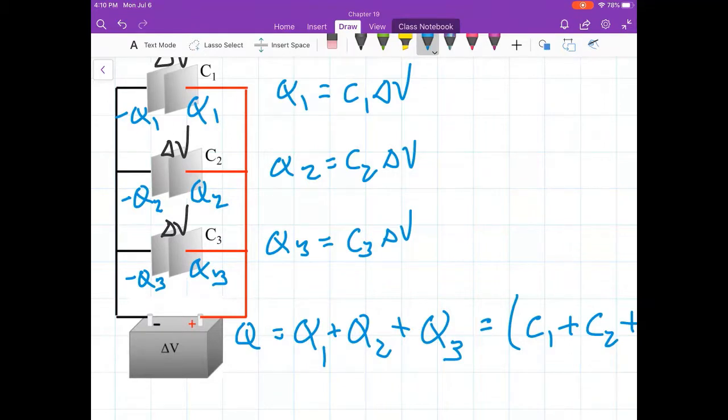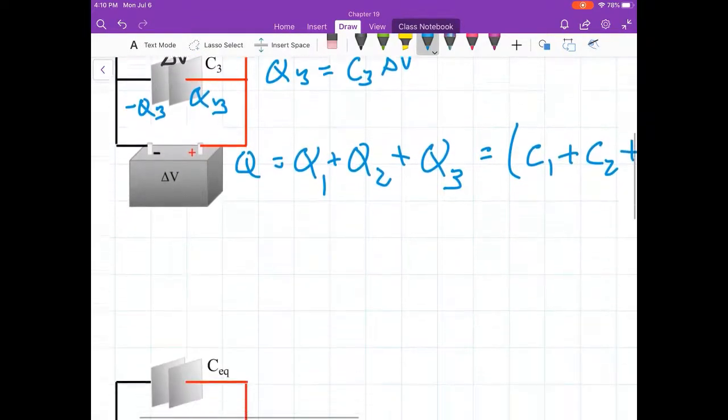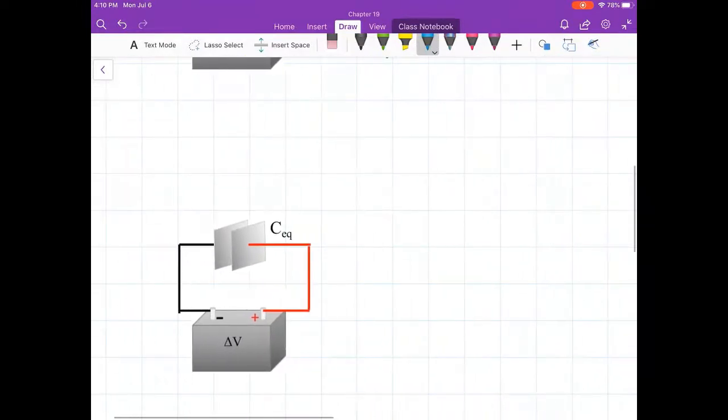Now we play a game. What is the game? The game is, if I wanted to make a circuit with only one capacitor, but that one capacitor C was equivalent, it's the EQ. Equivalent or equal in function to those other three. What would that one capacitor be? Well, that's what the EQ stands for, C equivalent. If that capacitor is truly equivalent, means for the same battery delta V, the same charge would go out and come back.